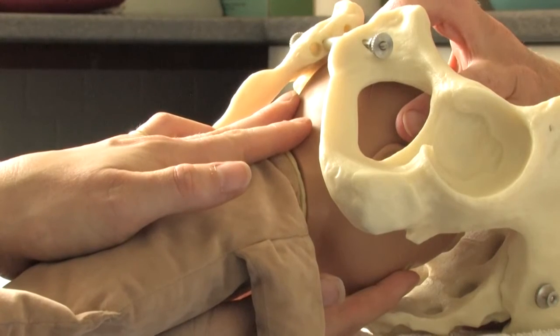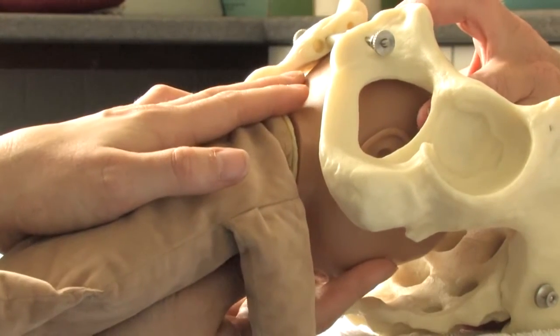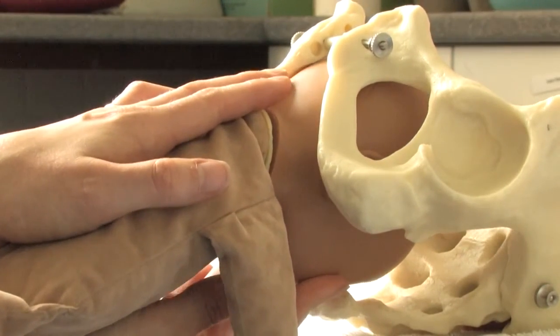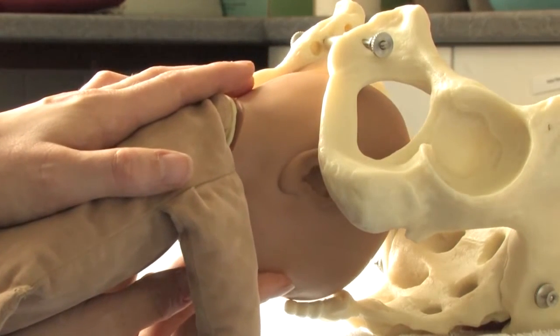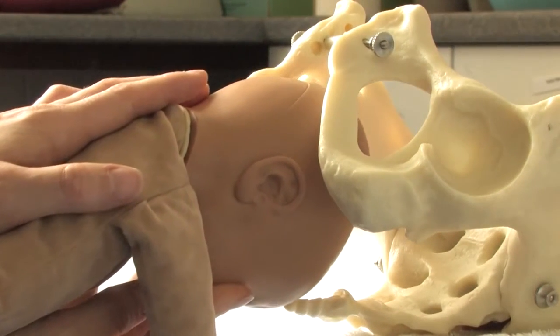The body externally rotates so the back is uppermost. In a flexed position, the chin, face and sinciput are born.